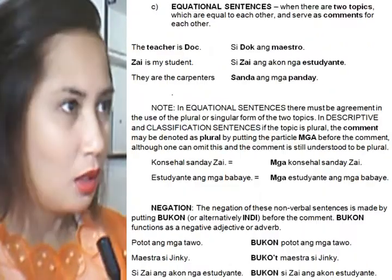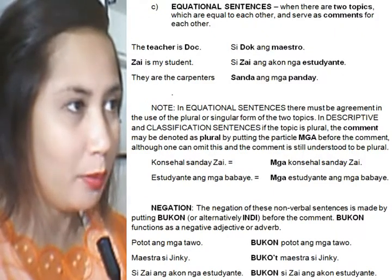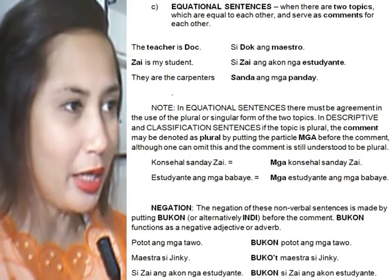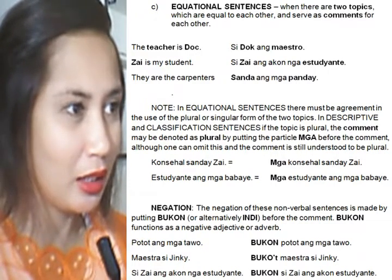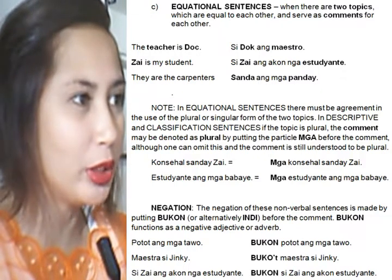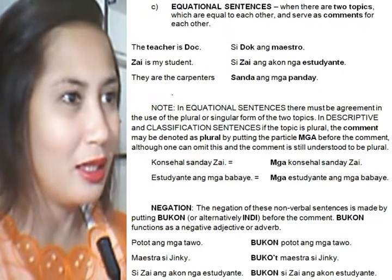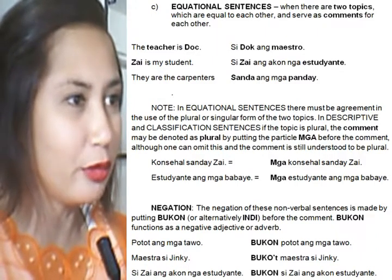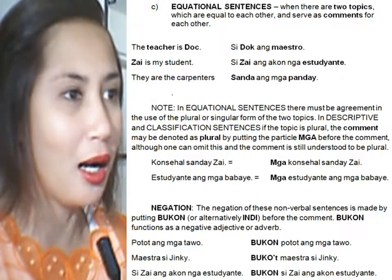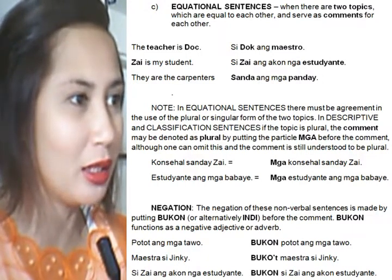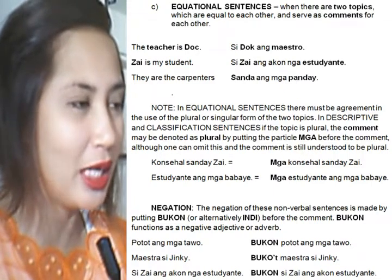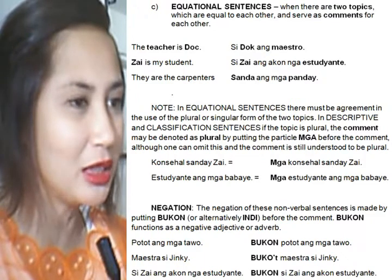Equational Sentences: When there are two topics which are equal to each other and serve as comments for each other. Examples: 'Si Doc ang maestro.' 'Si Zai ang akon niya estudyante.' 'Sanda ang mga panday.' In equational sentences, there must be agreement in the use of the plural or singular form of the two topics. In descriptive and classification sentences, if the topic is plural, the comment may be denoted as plural by putting the particle 'mga' before the comment, although one can omit this and the comment is still understood to be plural. Examples: 'Konsihal sanday Zai.' 'Mga konsihal sanday Zai.' 'Estudyante ang mga babay.' 'Mga estudyante ang mga babay.'